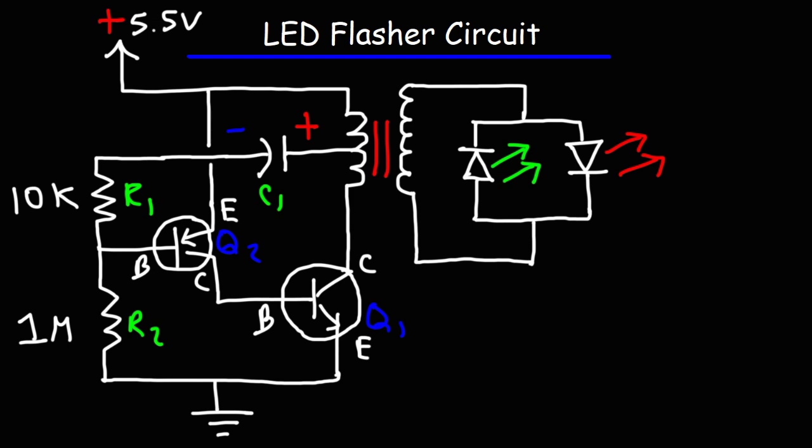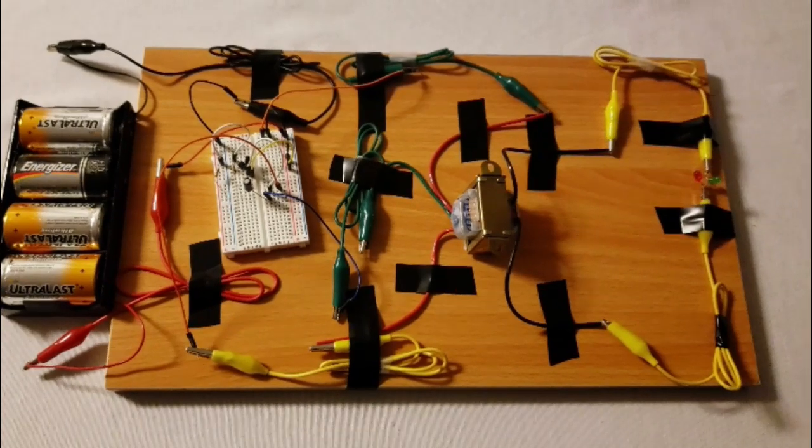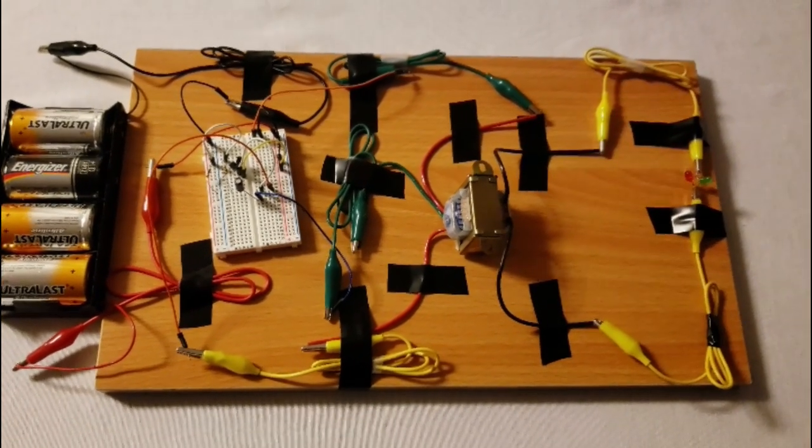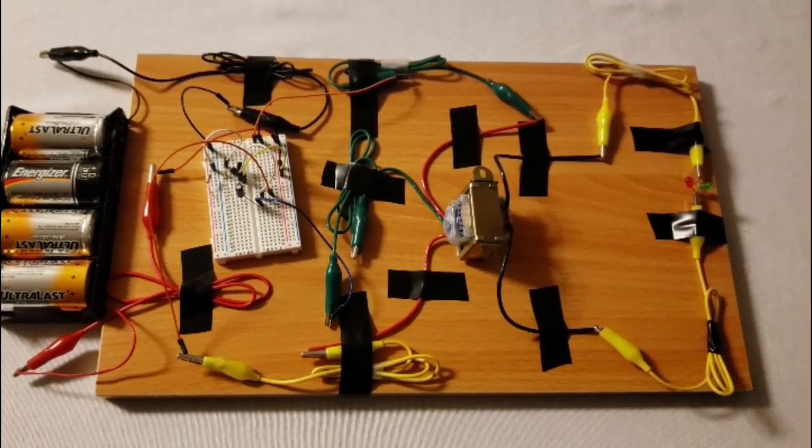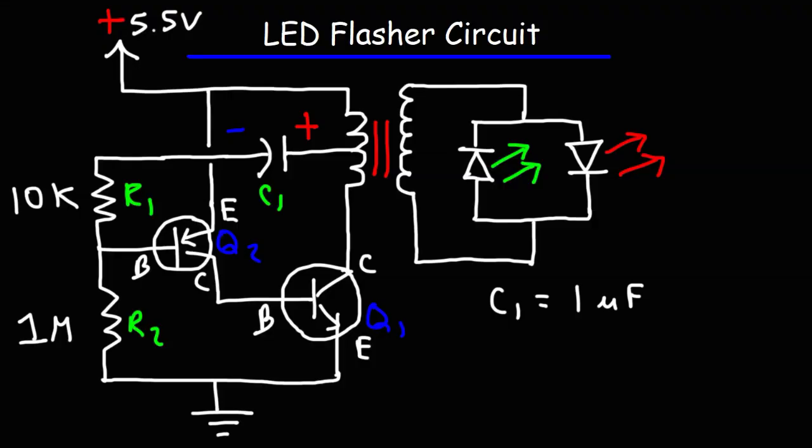So we're going to start with a 1-microfarad capacitor. Let's see what happens. Take note of the rate at which the LED is flashing. Now let's compare it when we increase the capacitance to 3.3 microfarads. Let's see how fast it's going to flash now.